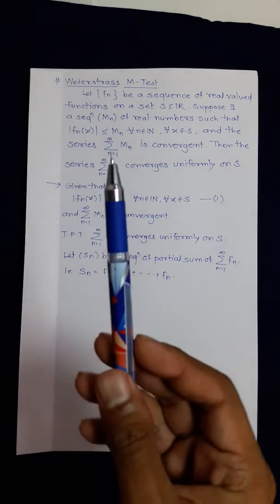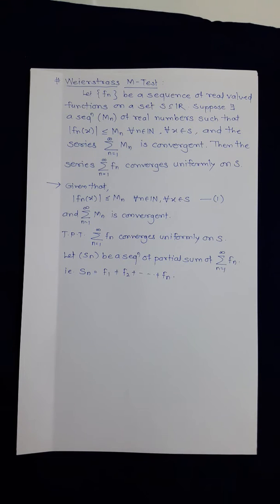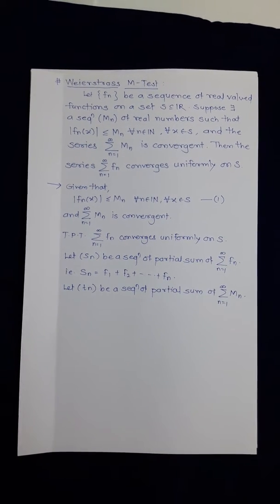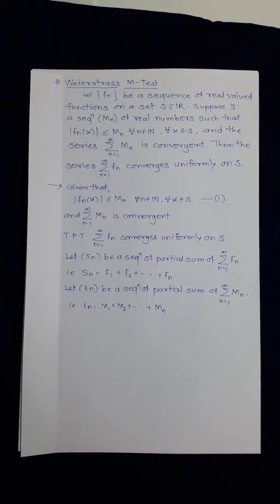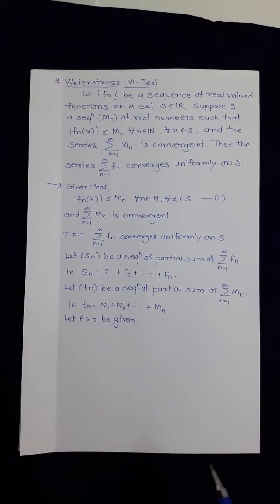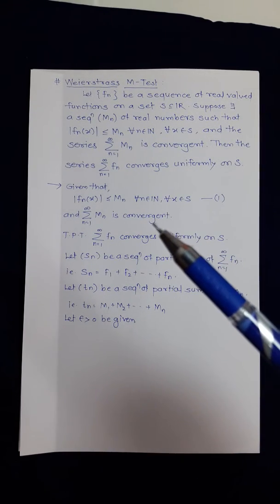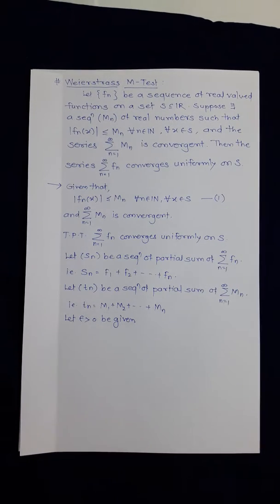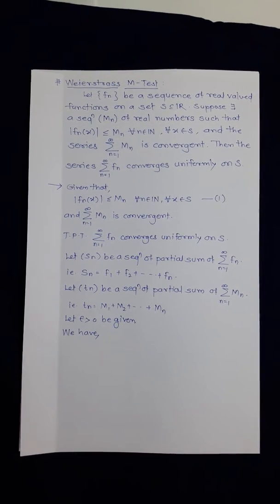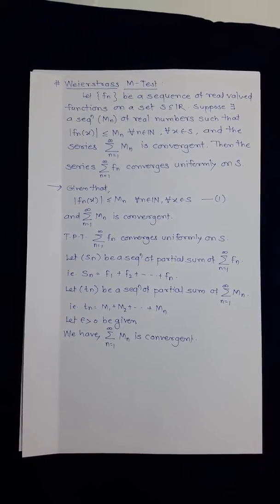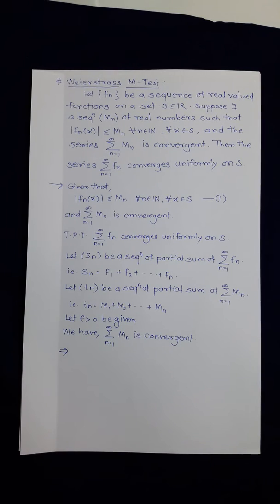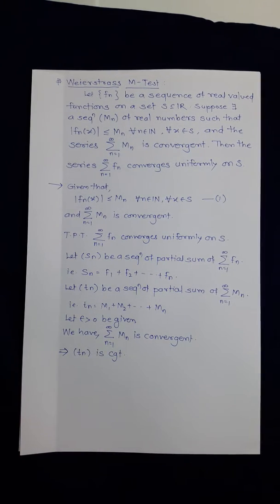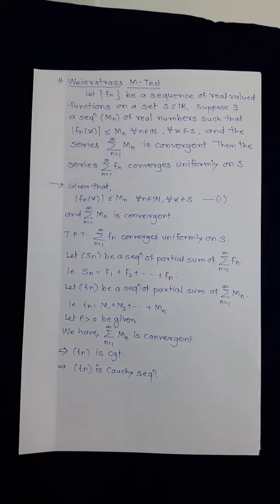Similarly, for the series summation M_n, we let T_n be the sequence of partial sums, so T_n = M_1 + M_2 + ... + M_n. Now let epsilon > 0. Using the second given condition, summation M_n is convergent, which implies the sequence of partial sums T_n is also convergent. Since every convergent sequence is a Cauchy sequence, T_n is a Cauchy sequence.